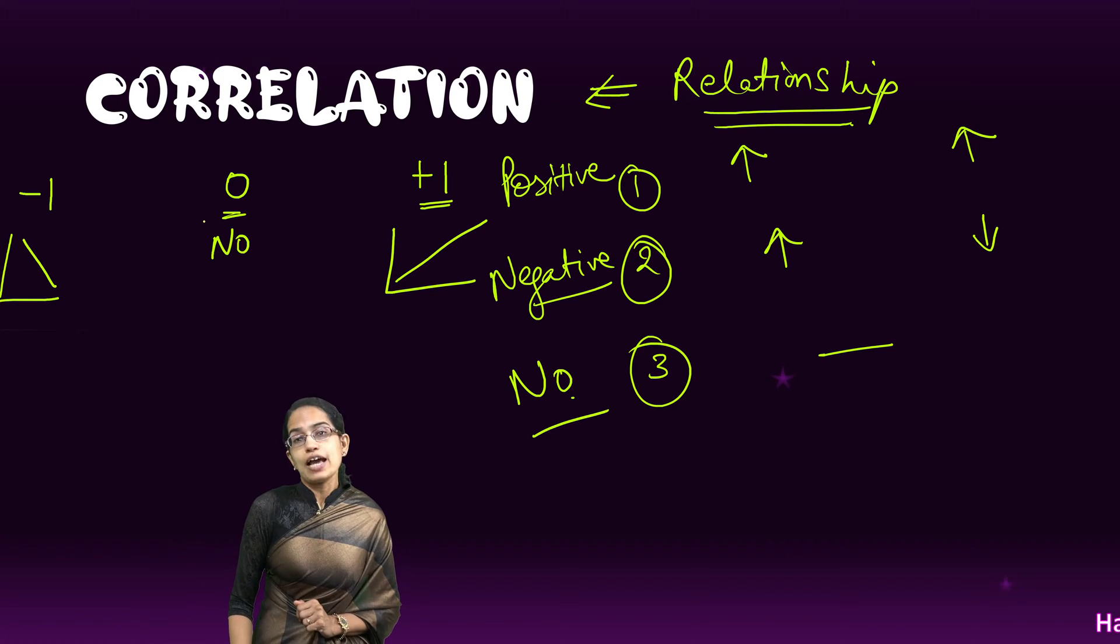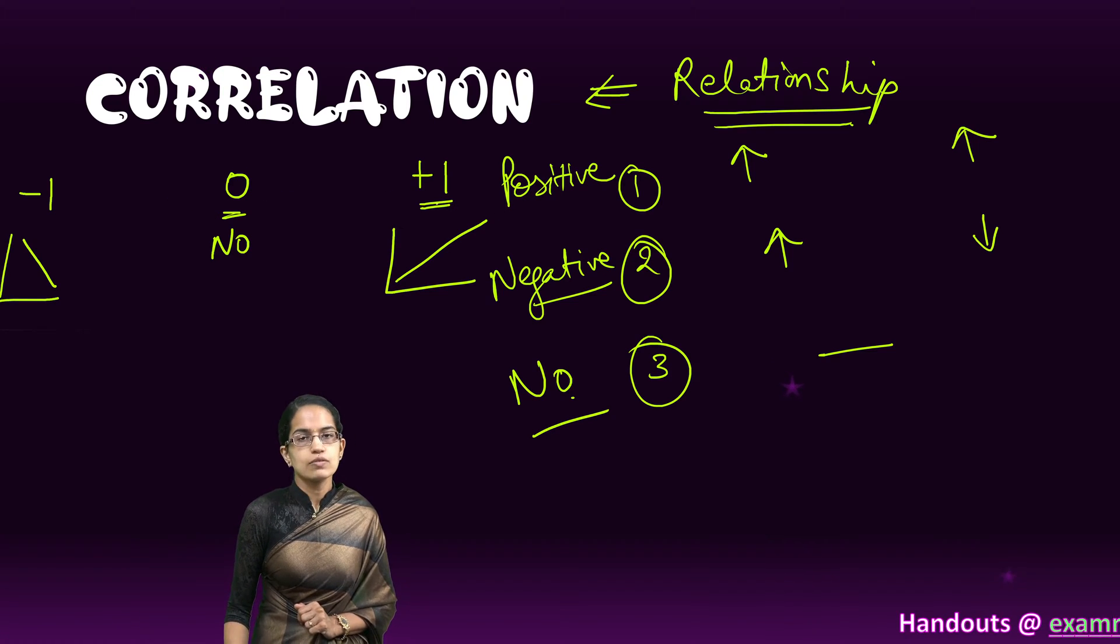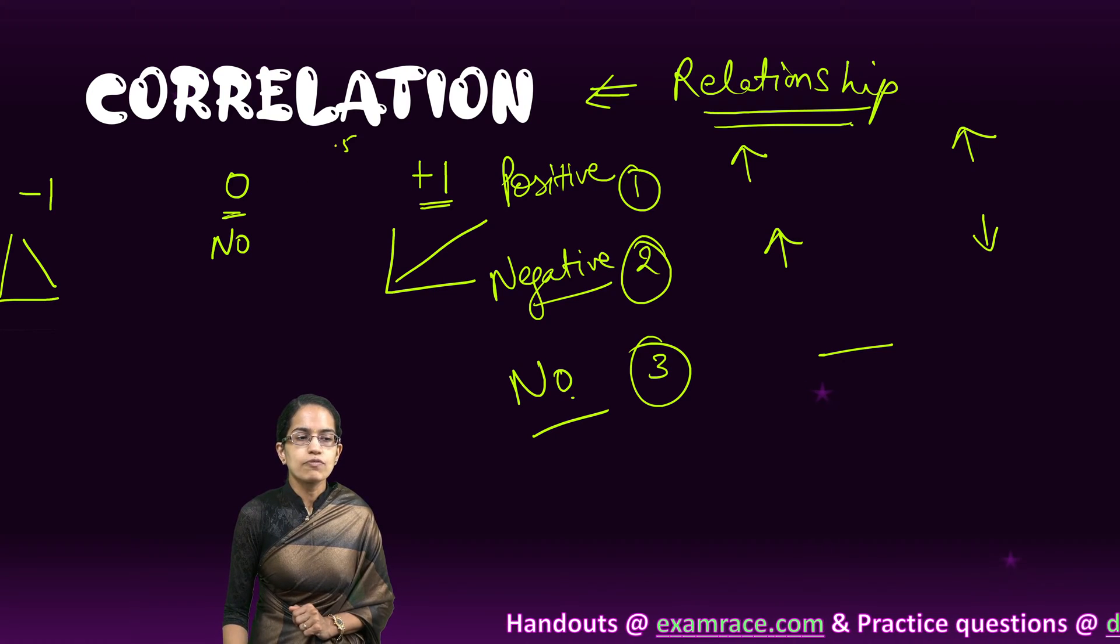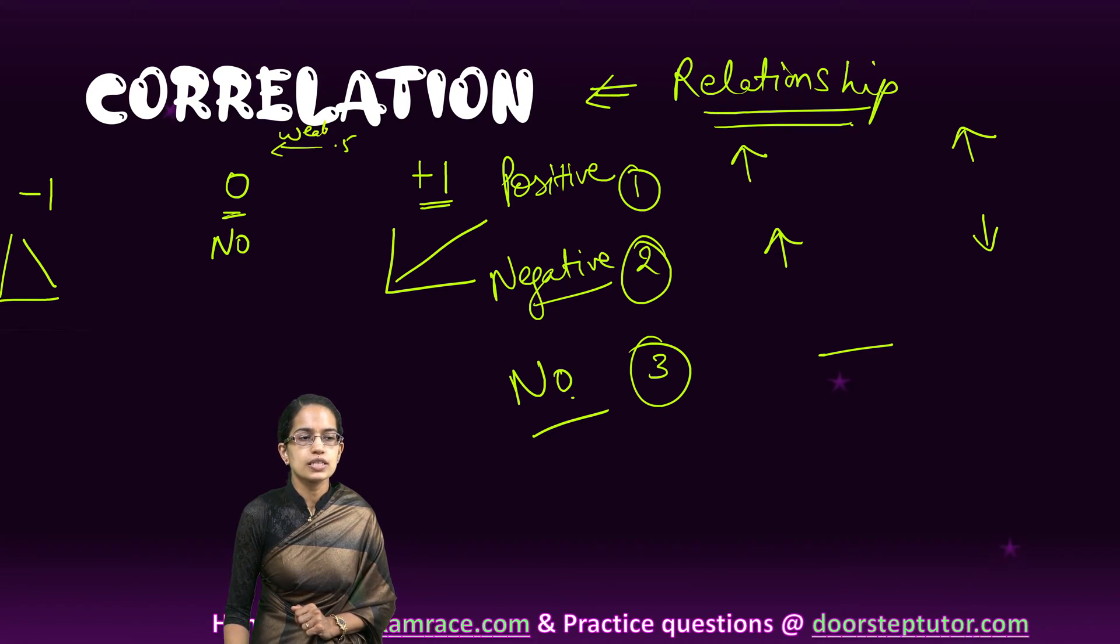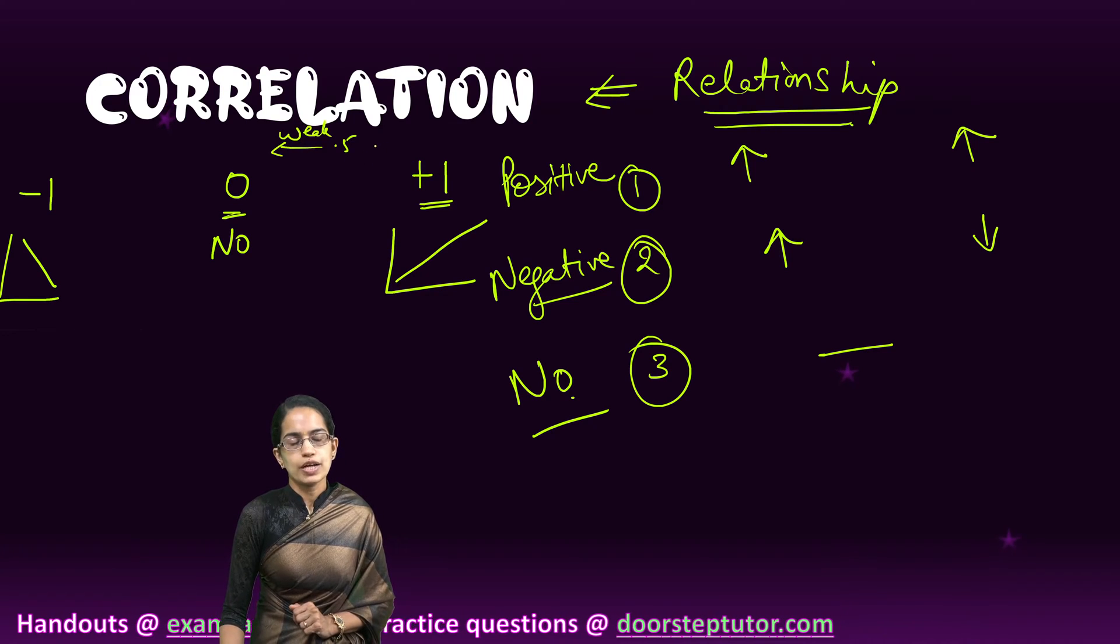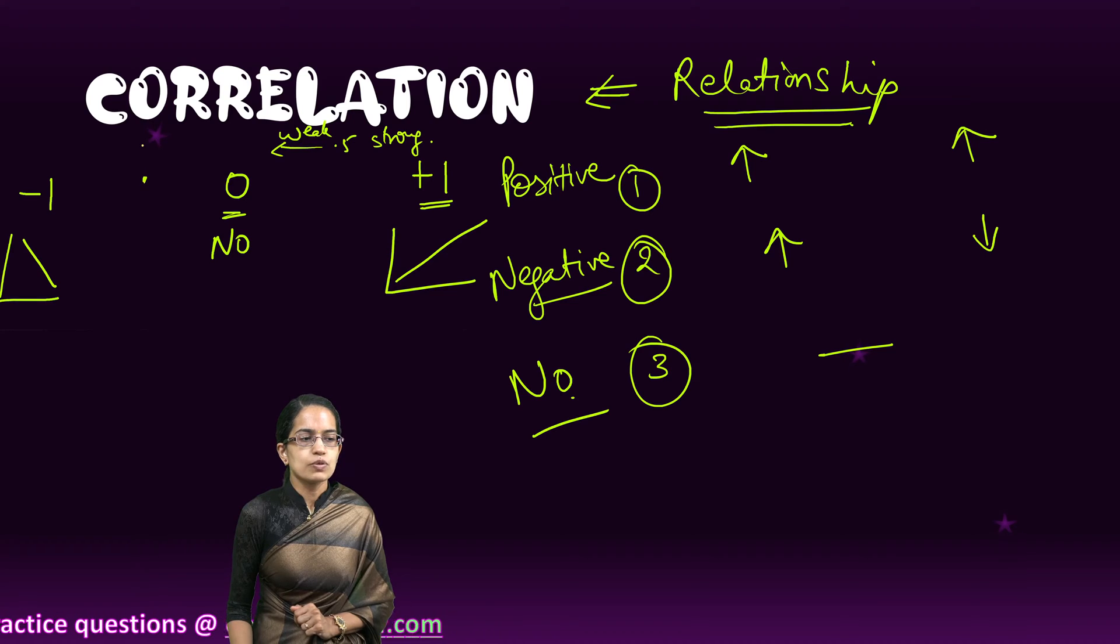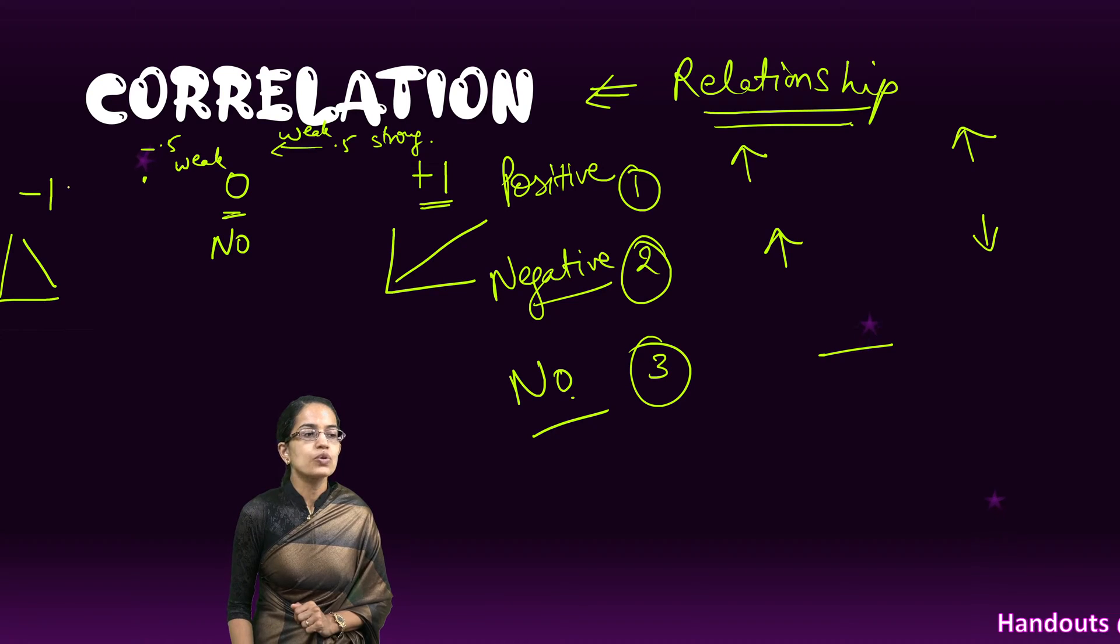Any value between 0 to 1 would be a correlation value. But values less than 0.5 towards 0 would be weak correlation, and values between 0.5 to 1 would be strong correlation. Similarly, values between 0 to minus 0.5 would be weak correlation, and minus 0.5 to minus 1 would be strong correlation.